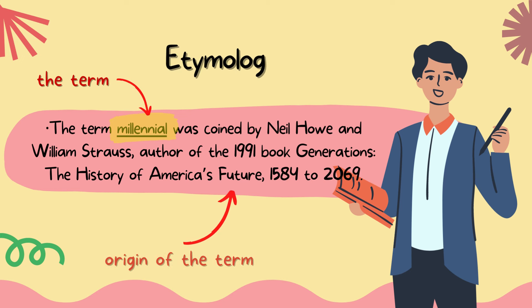First on our list is etymology. Etymology explains the origin of the word itself. For example, the term 'millennial' was coined by Neil Howe and William Strauss, authors of the 1991 book Generations: The History of America's Future, 1584–2069.